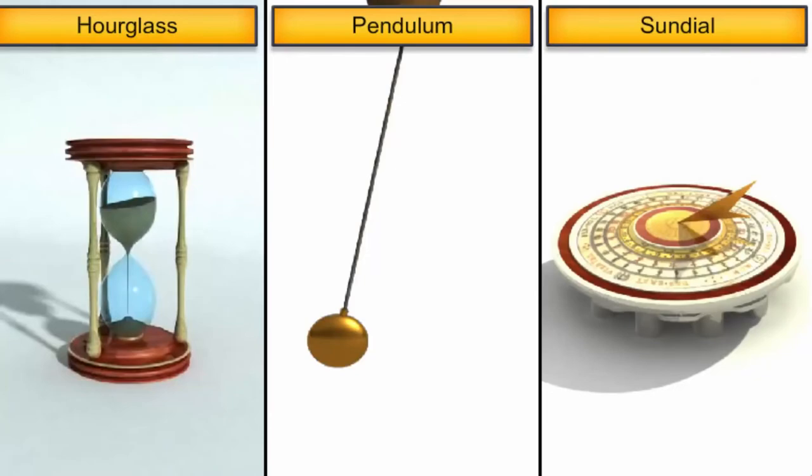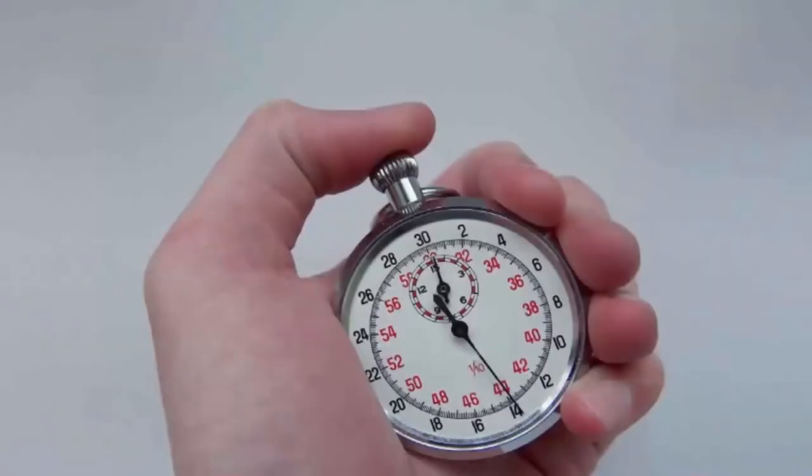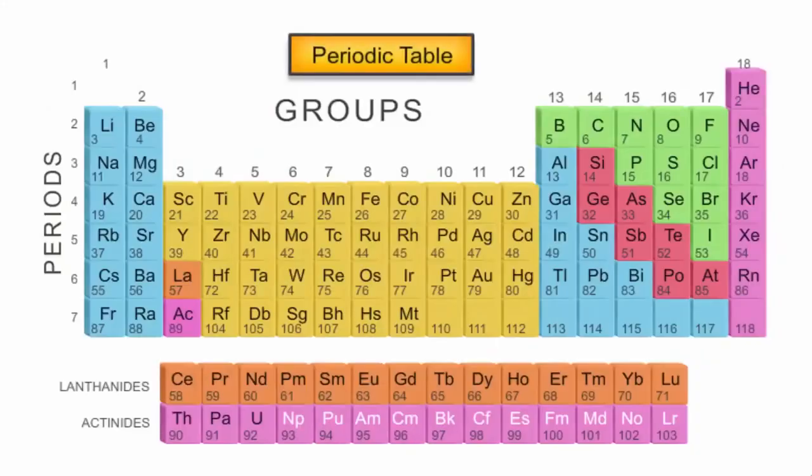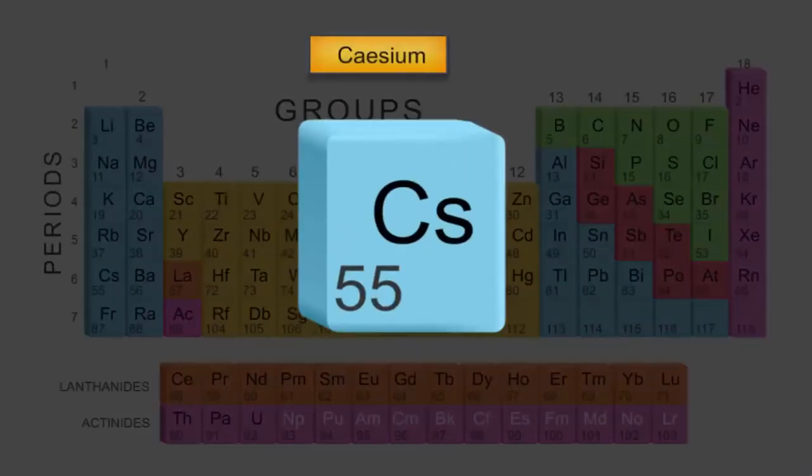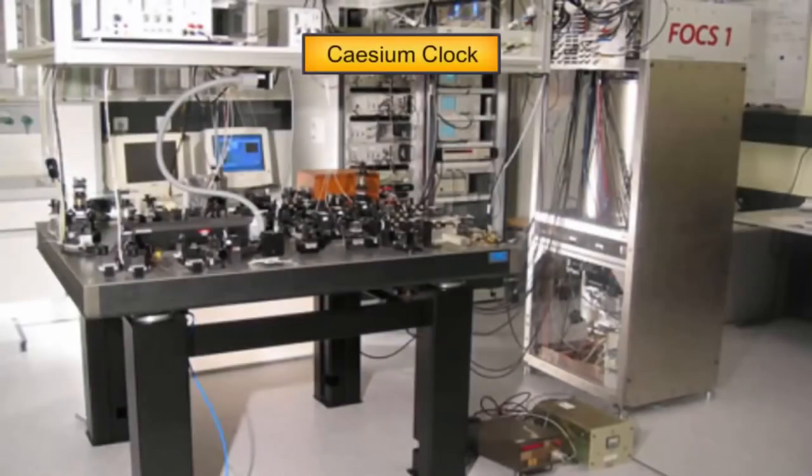To have the most accuracy in measuring time, now we use an atomic standard of time, which is based on the periodic vibrations produced in a caesium atom. Hence, the clock is also referred to as the caesium clock or the atomic clock.